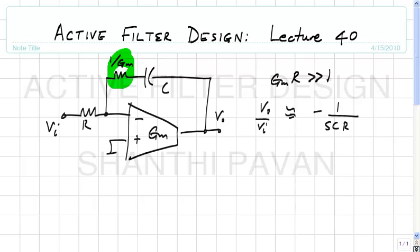A student asks whether the zero-cancelling resistor will produce an additional pole. The answer is no — there can only be one pole in this circuit because there is only one capacitor.